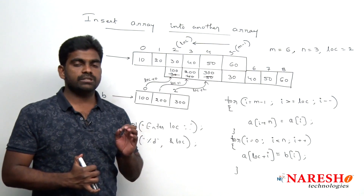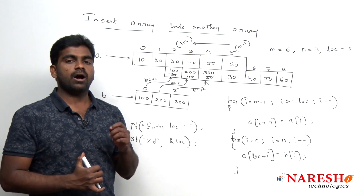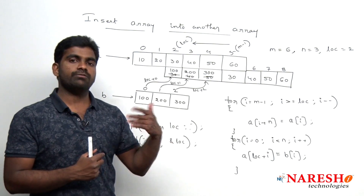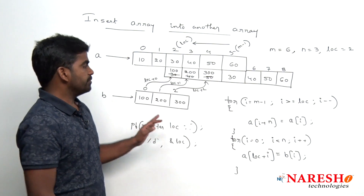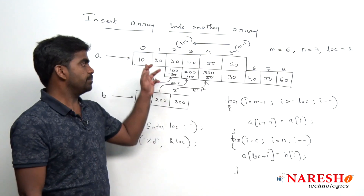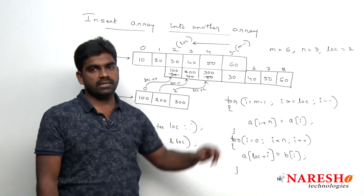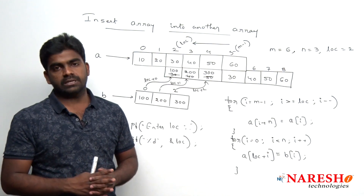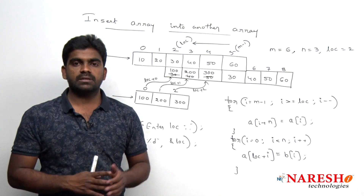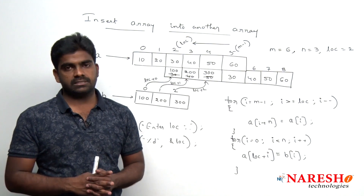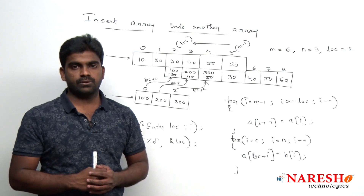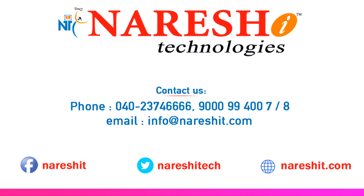This is how we shift elements and insert one array into a specified location of another array. After inserting, how many elements do we display? Total m plus n elements — m is 6 and n is 3, so 9 elements. The for loop repeats m plus n times and displays all elements after insertion. Hope you understood. For more videos, please subscribe to Nourish IT channel. Thank you, bye.